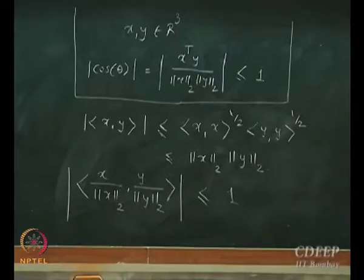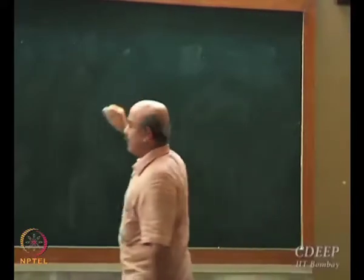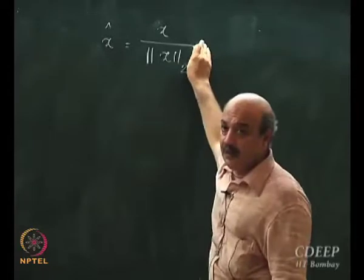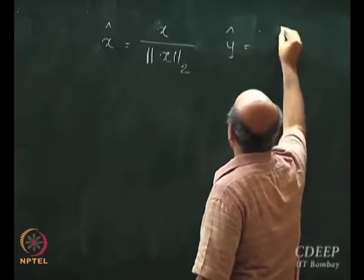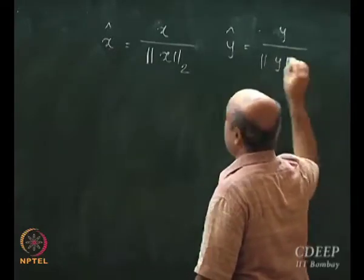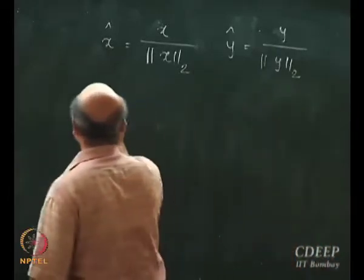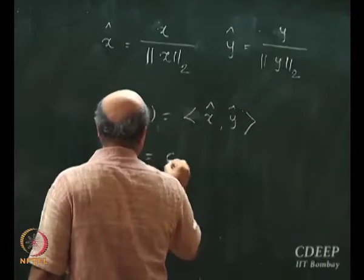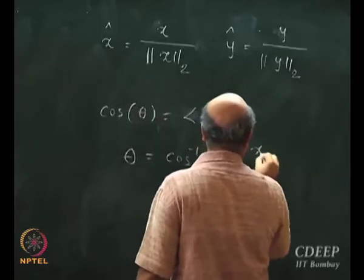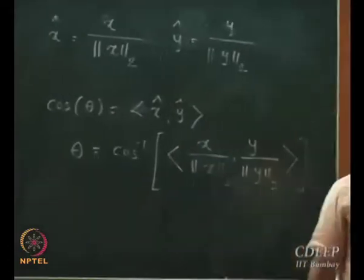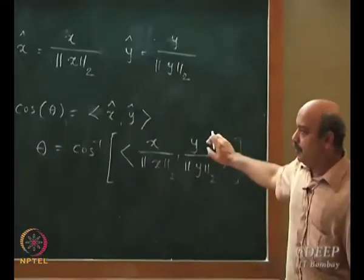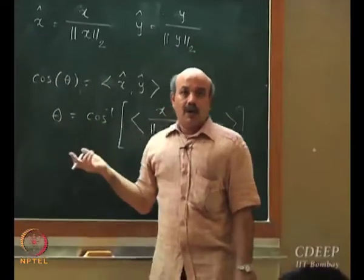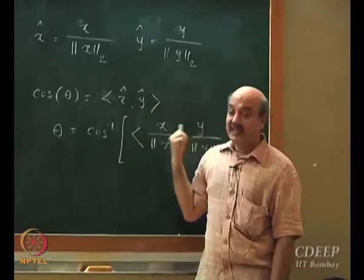Let me define an angle in any inner product space. Define a unit vector X-hat as X divided by the two-norm of X, and another unit vector Y-hat as Y divided by the two-norm of Y. Then cosine theta, or theta equals cosine inverse, of the inner product of X-hat and Y-hat. So inner product — the generalization of dot product — allows us to define angle in any general inner product space.